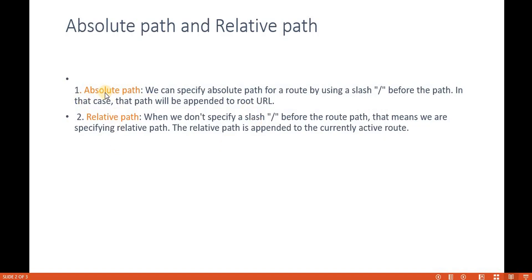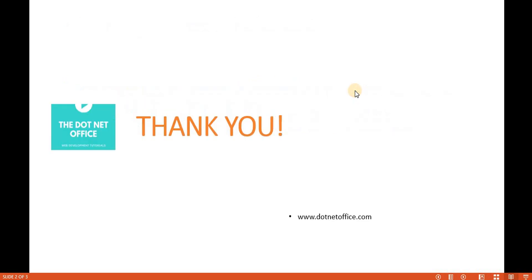So this is the difference between absolute path and relative path. The main difference: if we use a slash it is an absolute path; if we do not use a slash it is a relative path. An absolute path always appends to the root URL, while a relative path always appends to the currently active route. That's it for this video — if you have any questions, please comment. Thank you.